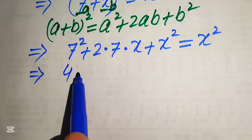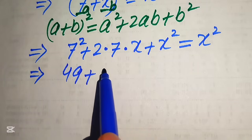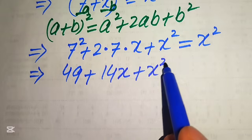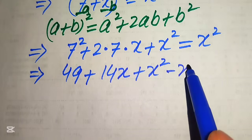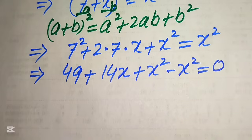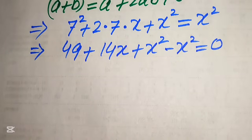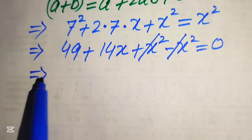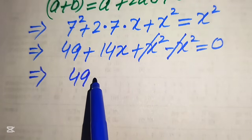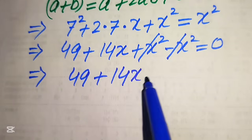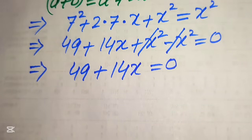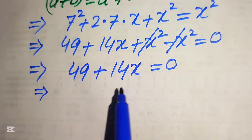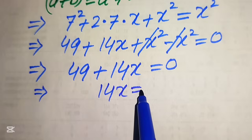So 7² = 49, and 2 times 7 gives 14x. We move the x² from the right-hand side to the left, where it becomes −x². The positive x² and negative x² cancel, and we obtain 49 + 14x = 0.